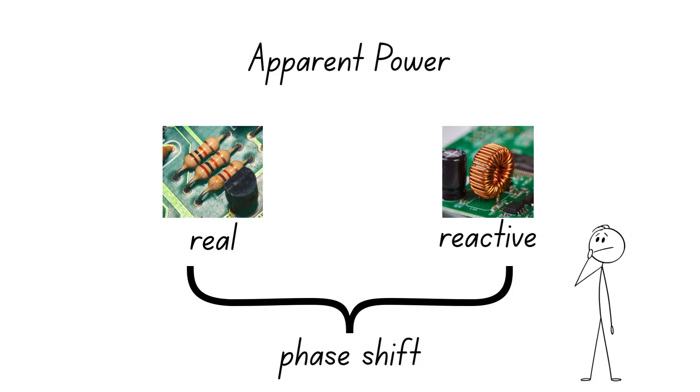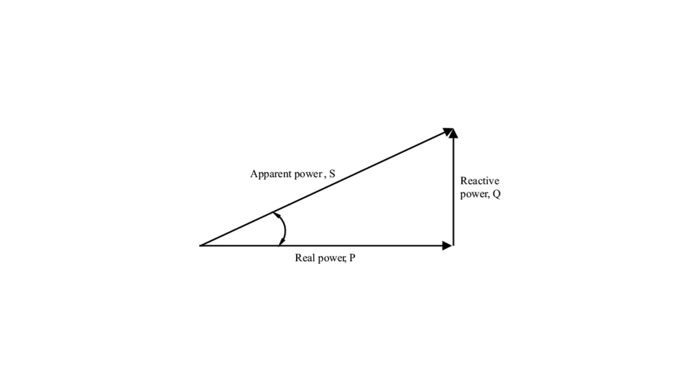These power values can be represented as vectors to account for phase shifts. Reactive power and real power are always at 90 degrees to each other, and the apparent power is the vector sum of these two. This forms what is known as a power triangle.